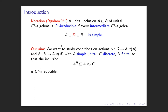What we want to do is study conditions on actions of groups: alpha from G on A and beta of H on A, with A a simple unital C*-algebra, G discrete, H finite. We want to consider the inclusion of the fixed-point algebra by the finite group into the cross-product by the discrete group, and study conditions under which this inclusion is C*-irreducible.